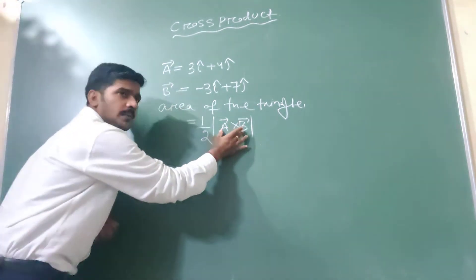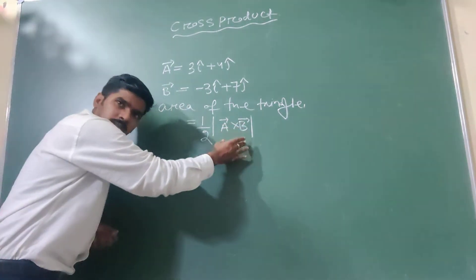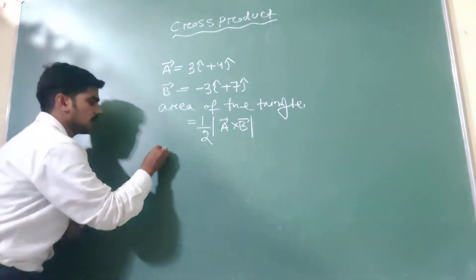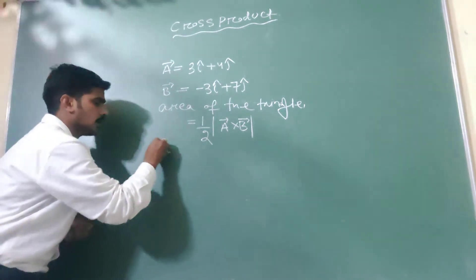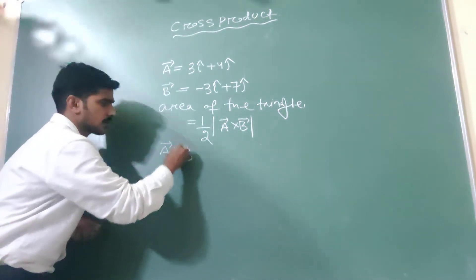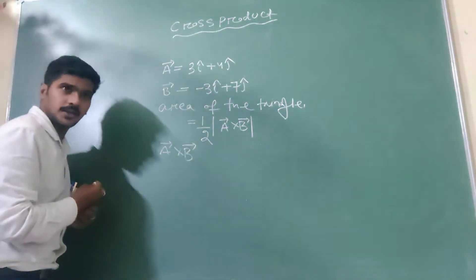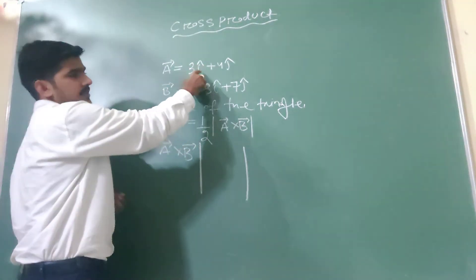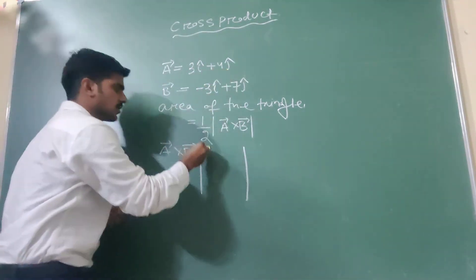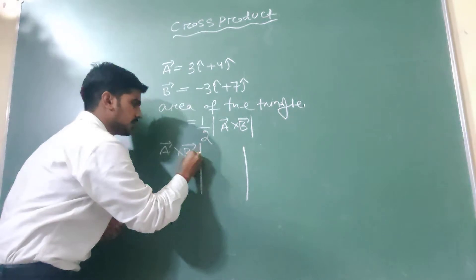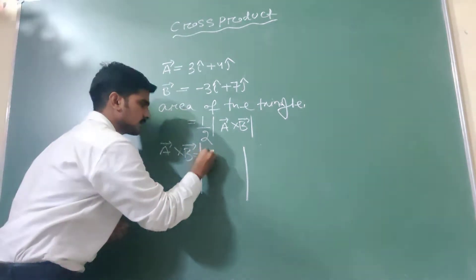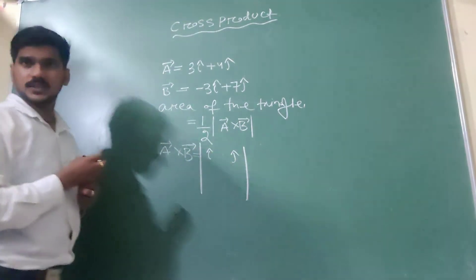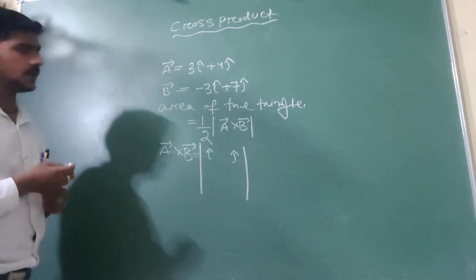So first find A vector cross B vector. Here we have only two components, I cap and J cap, so simply write I cap here and J cap.